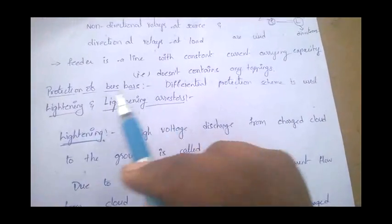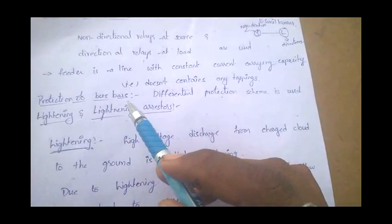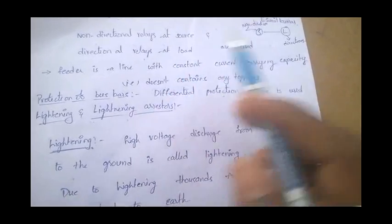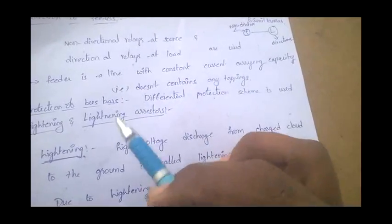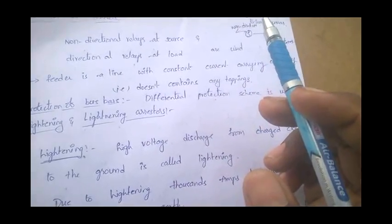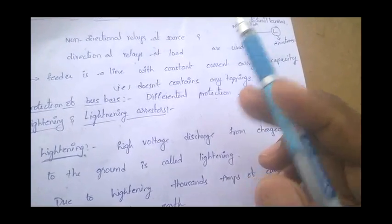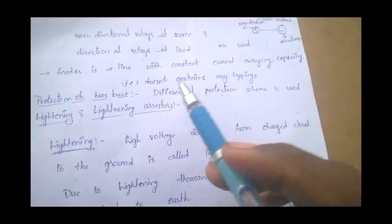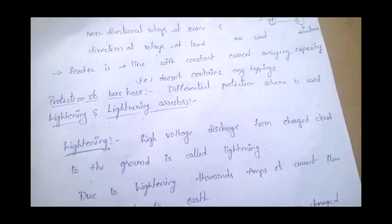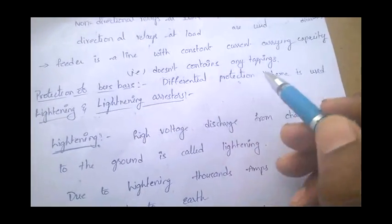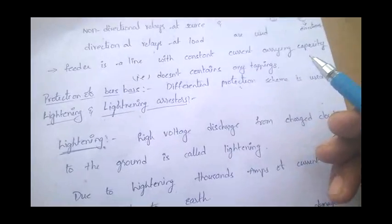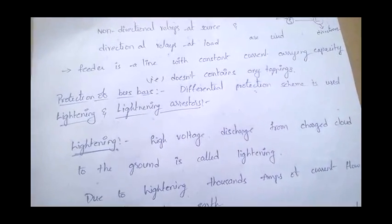Protection of busbars: a busbar is a single bar to which the output of all generators is connected — all three phases R, Y, B. For busbar protection, differential protection scheme is used. If there is any difference detected, the relay will operate.